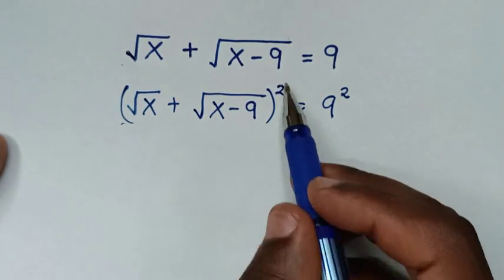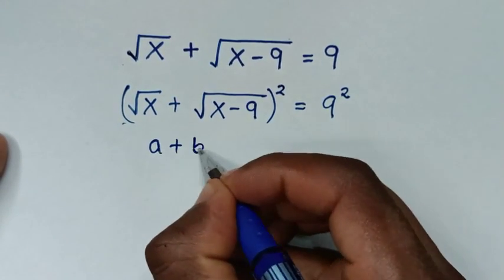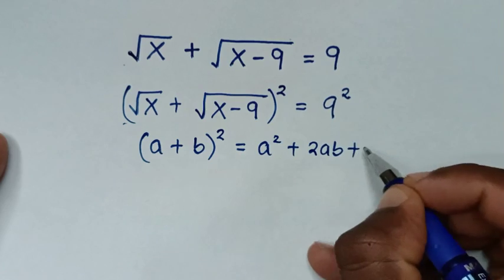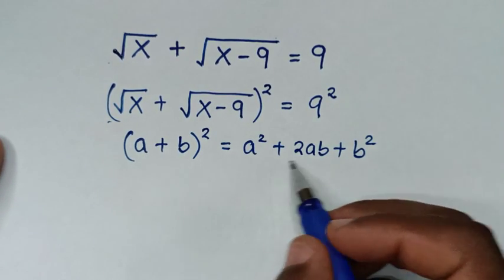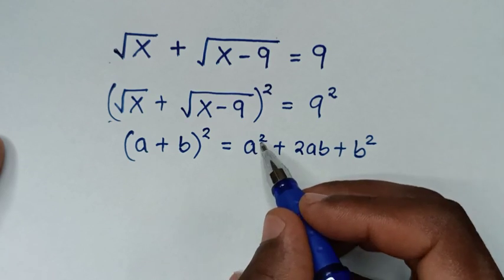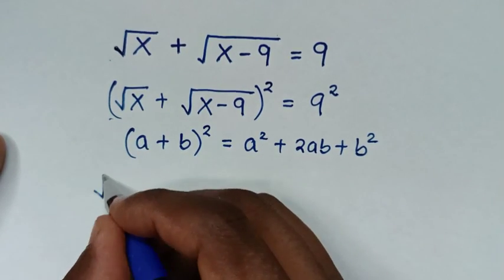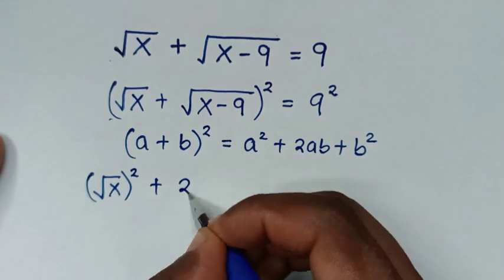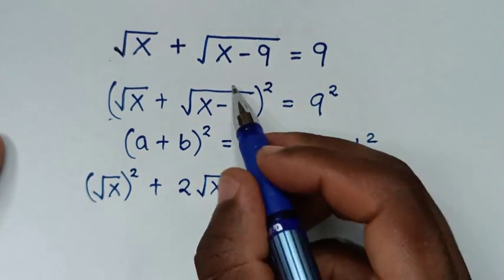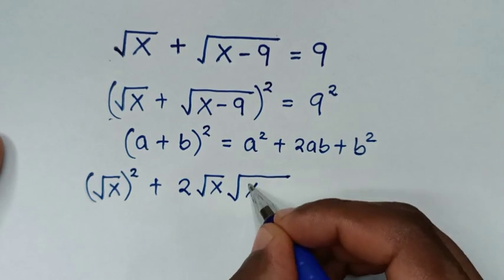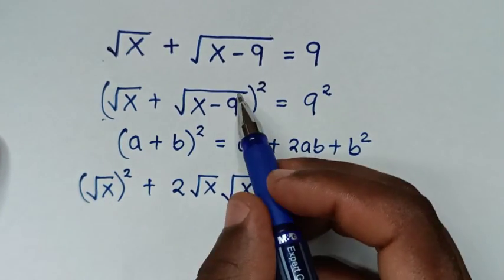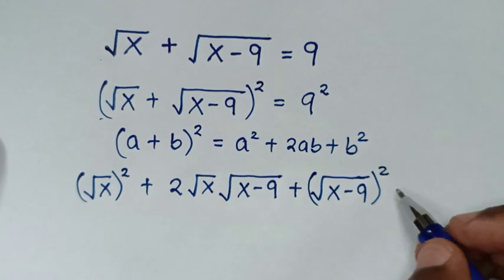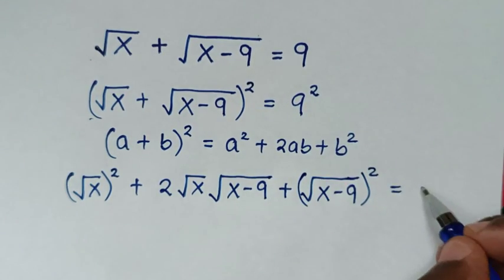The left side is in the form of (a + b)², which equals a² + 2ab + b². Applying this: a² gives (√x)², then 2ab gives 2 times √x times √(x−9), then b² gives (√(x−9))², and the right side 9² equals 81.